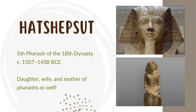Hatshepsut came to the throne of Egypt in 1478 BCE as the principal wife of her half-brother, Thutmose II. When he died, she also served as regent for his son, Thutmose III. But because she was the daughter of Thutmose I, she asserted her lineage as ruler. In fact, the majority of the depictions we see of her are as a man, showing herself as a pharaoh and not a queen or chief royal wife.